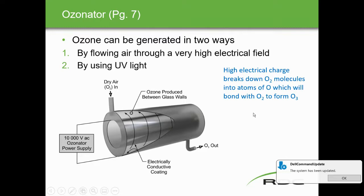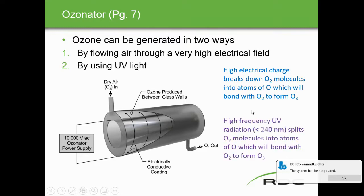The second way to produce ozone is by using UV light. High-frequency UV radiation at less than 240 nanometers splits O2 molecules into atoms of oxygen, which then bond with O2 to form O3. So ozone production uses either a high electrical field or UV radiation.